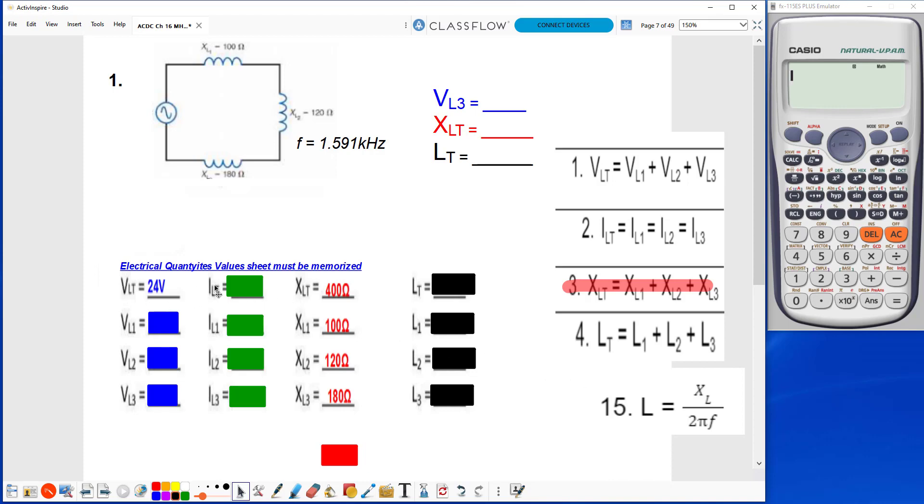For my V, my I, and my X I can use Ohm's Law. So ILT would be equal to VLT divided by XLT. So I hit over under, I've got 24 volts divided by 400 ohms. And that gives me 60 milliamps.